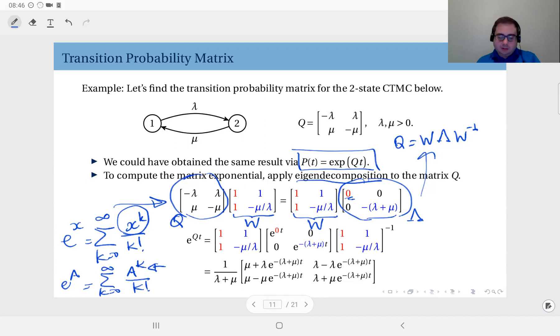So you see, to compute the power of a matrix, if you have it in eigen decomposition form, you would have, for instance, the square as w times lambda times w inverse multiply by itself w lambda w inverse.